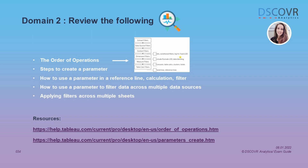You also need to know the steps to create a parameter. Step one: create the parameter control. Step two: show the parameter control — you must explicitly click on the parameter and show it, because Tableau won't automatically display it. Step three: link the parameter control to your visualization using a reference line, a calculation, or a filter. Step four: interact with the parameter control to update the visualization through that interaction.